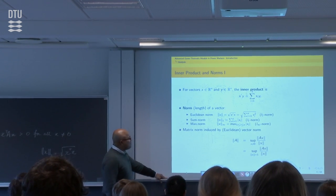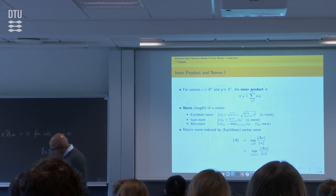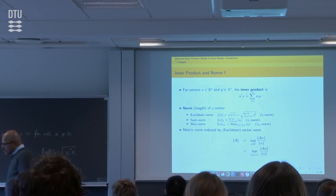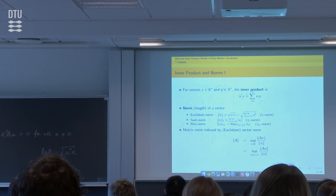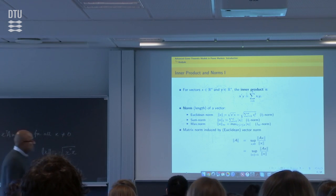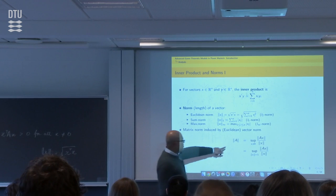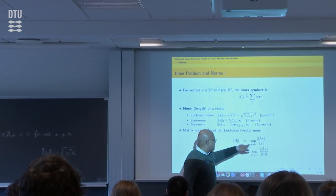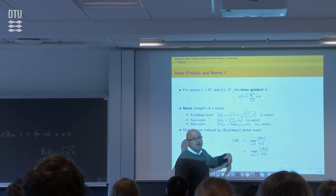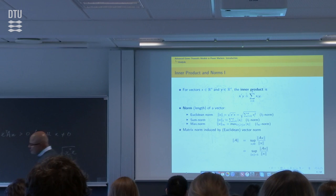For the matrix norm: if you have a matrix, the question is what is the appropriate specification of the norm of a matrix, and there are a variety of those. This is one such — a matrix norm that is induced by the vector norm.